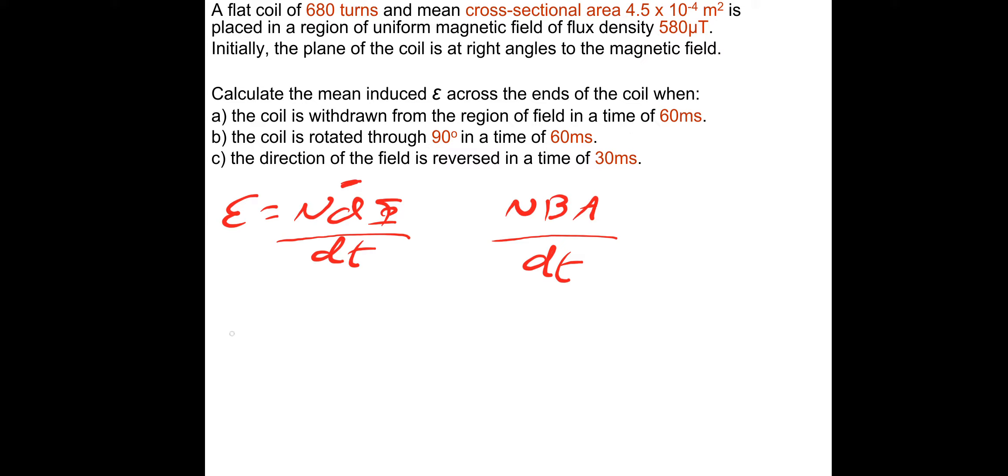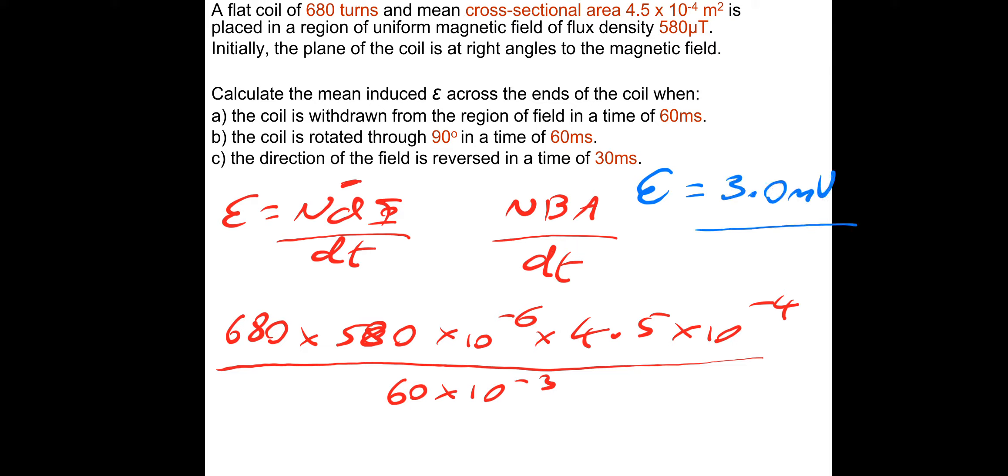So the number of coils is 680, multiplied by the magnetic flux density 580 micro tesla, so times 10 to the minus 6, multiplied by the cross-sectional area 4.5 times 10 to the minus 4. And then that would be minus zero because it's the change in flux. Flux outside of the field would obviously be zero, divided by the change in time for this to occur, which is 60 milliseconds, so 60 times 10 to the minus 3. And that would give an EMF that is equal to 2.96 times 10 to the minus 3, so 2.96 millivolts, which would come around to 3 millivolts.